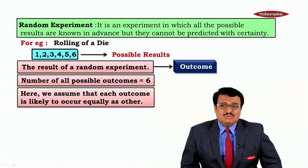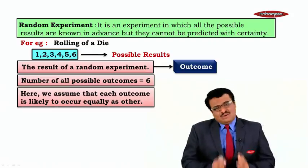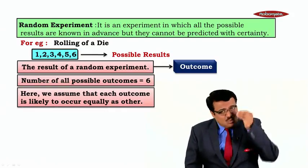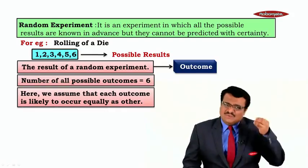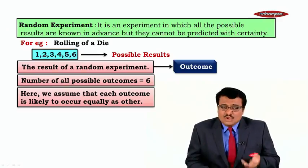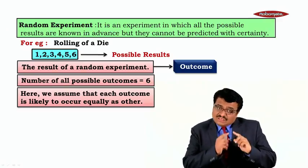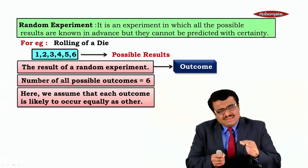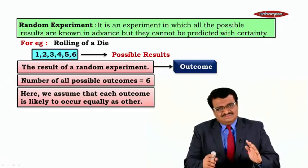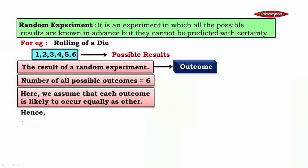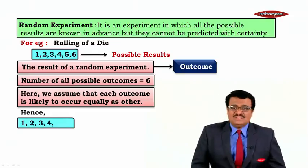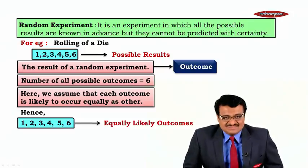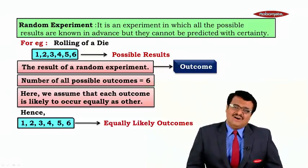Now here we assume that each outcome is equally likely to occur as the other. For example, when we roll a die, the chance of getting 1 is the same as the chance of getting 2 or 3. You cannot say the chance of getting 4 is better than the chance of getting 3. All of them are equally likely to occur. So these outcomes 1, 2, 3, 4, 5, and 6 are called equally likely outcomes, because all are equally likely to occur.